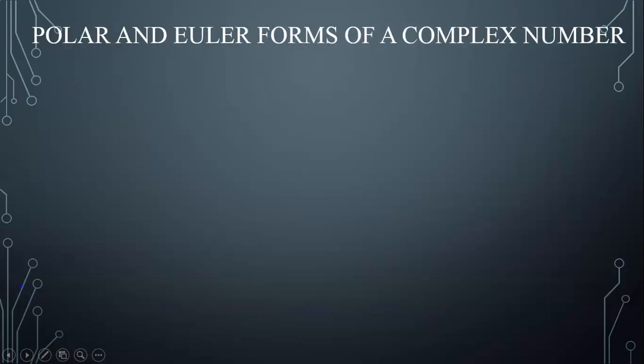In this lesson, we're going to discuss the polar form and Euler form of a complex number. If I were to start with a complex number Z in the form X plus iY, that's the algebraic form of Z where X and Y are real.